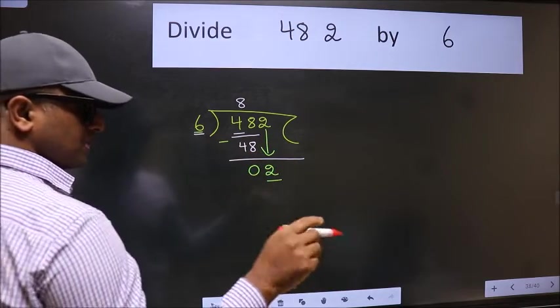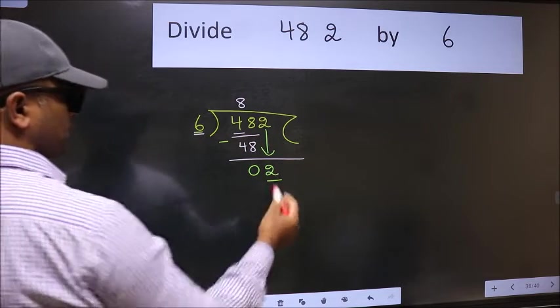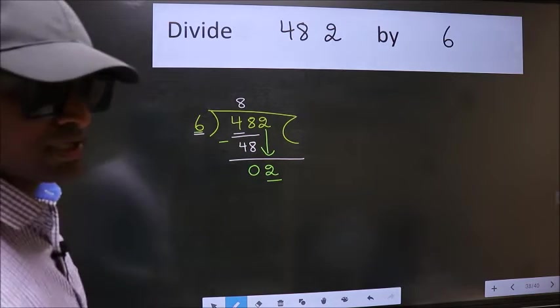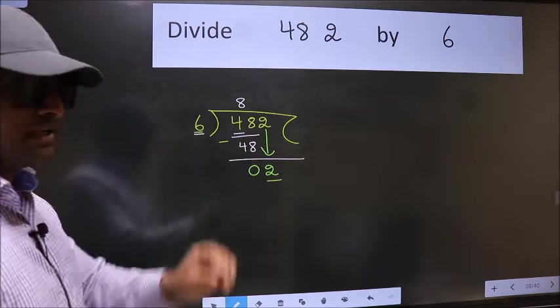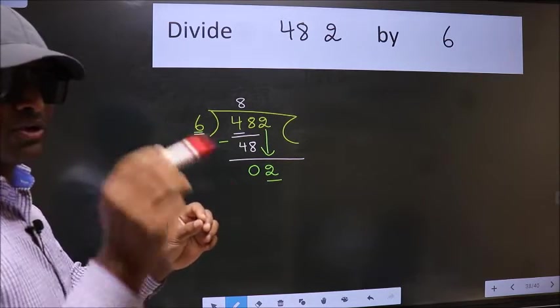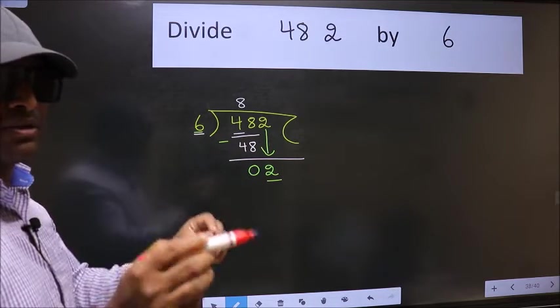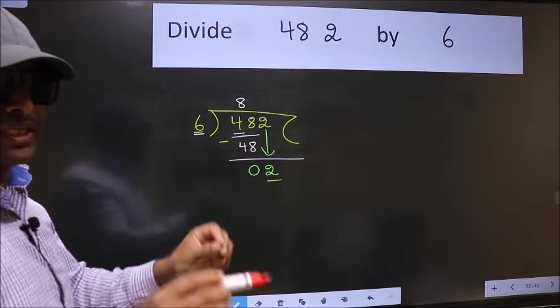And in the same step you want to put dot, take zero, which is wrong. I repeat: bring down the number and also put dot take zero - both at the same step you should not do.